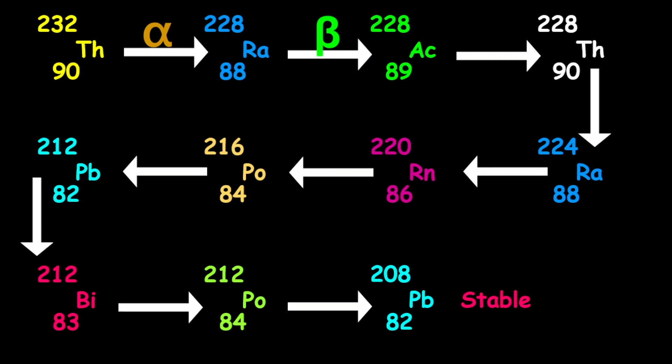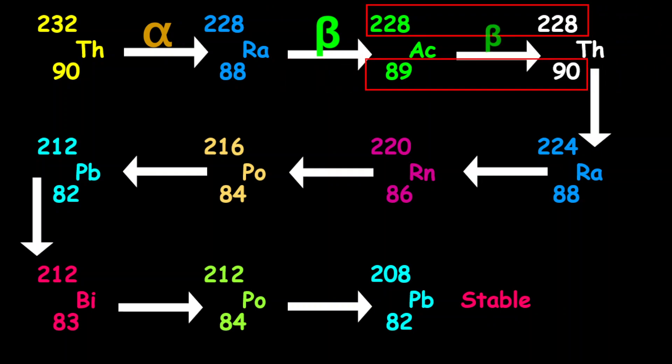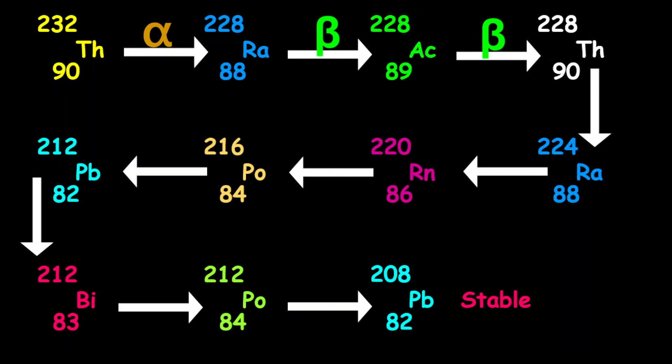From actinium into thorium-228, the mass number remains the same, the proton number increased by 1, therefore this is another beta decay.